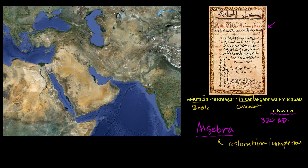Al-Jabr is where it shows up — you could view that as completion. And then Wa'al Muqabla, which means essentially balancing. So if we wanted to translate it, the book title says compendious on calculation by completion and balancing. That is the rough translation, and that is the source of the word algebra.